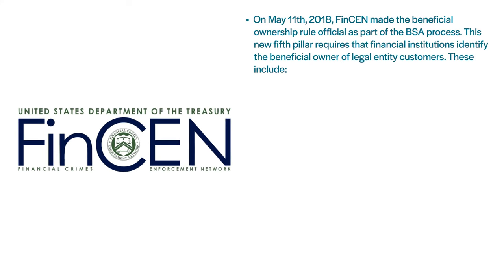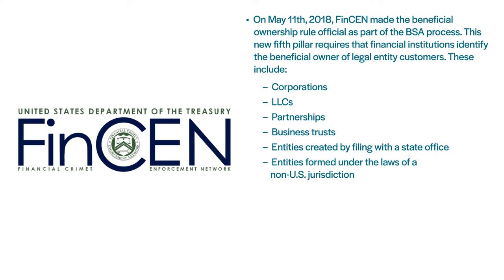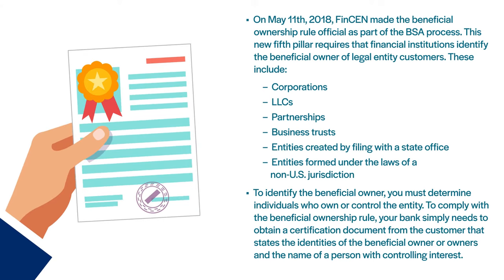On May 11, 2018, FinCEN made the beneficial ownership role official as part of the BSA process. This new fifth pillar requires that financial institutions identify the beneficial owner of legal entity customers. These include corporations, LLCs, partnerships, business trusts, entities created by filing with a state office, and entities formed under the laws of non-U.S. jurisdiction. To identify the beneficial owner, you must determine individuals who own or control the entity. Your bank simply needs to obtain a certification document from the customer stating the identities of the beneficial owner or owners and the name of the person with the controlling interest.